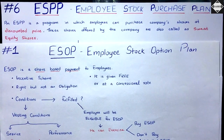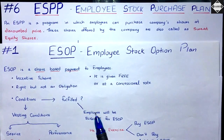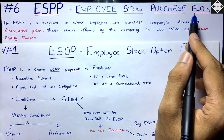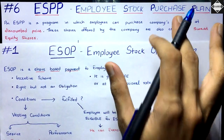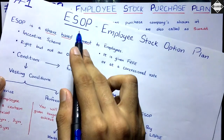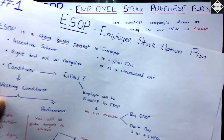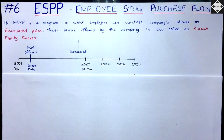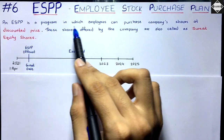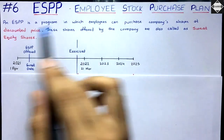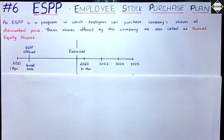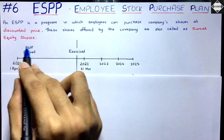Welcome back to Sahab Academy. In today's sixth video of the ESOP chapter, we are going to talk about a small topic called ESPP — Employee Stock Purchase Plan. We haven't discussed this topic yet, so in this video we'll understand what ESPP is, how it works, and how it is different from ESOP. The shares offered by a company under this scheme are called sweat equity shares.